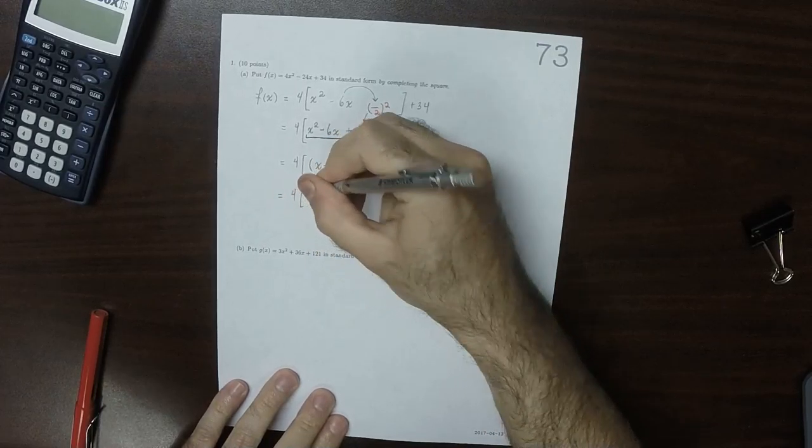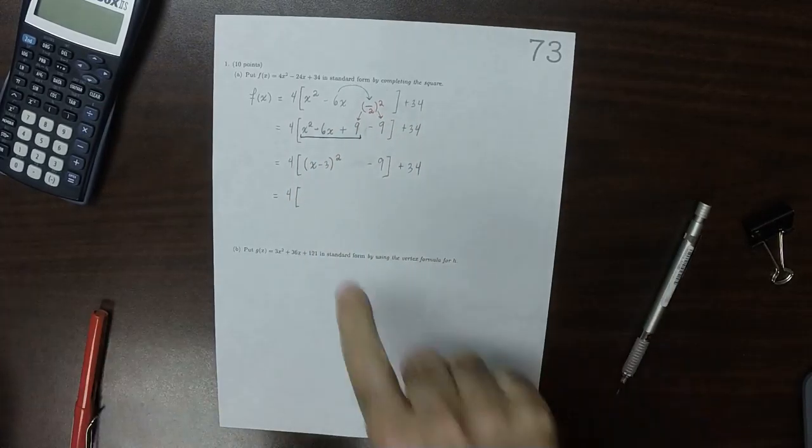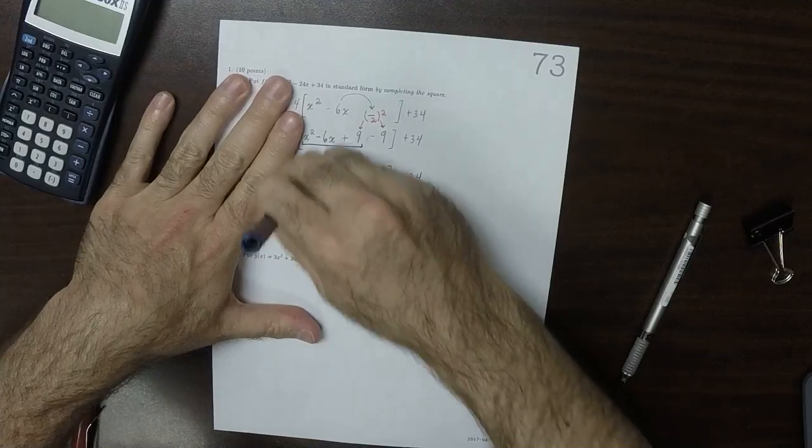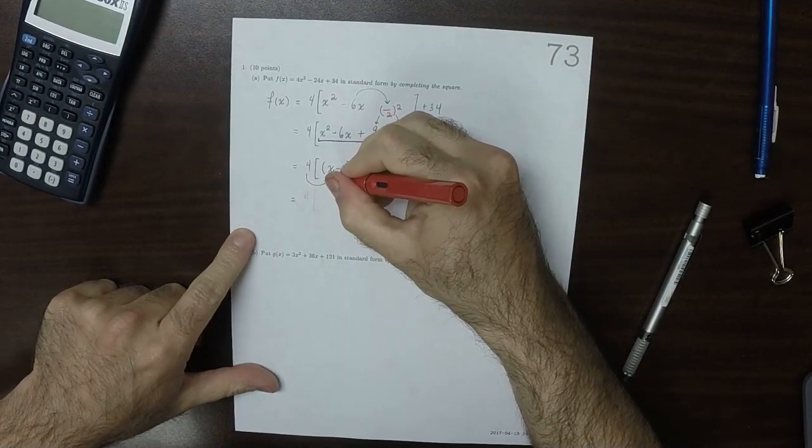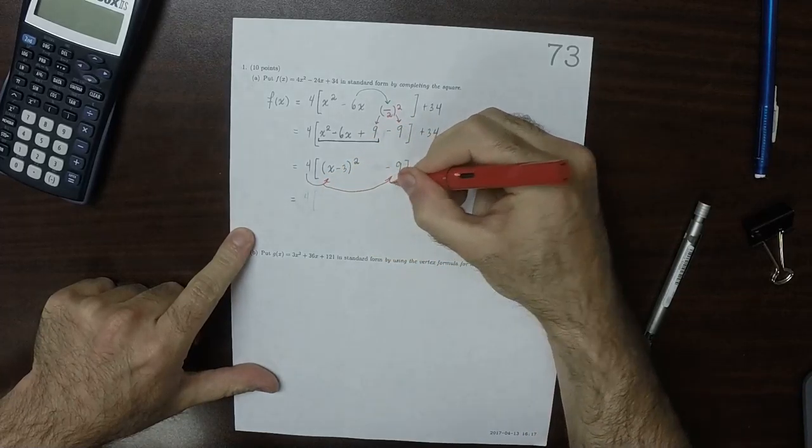So then 4, I'm going to distribute that. I'll distribute the 4 to there, and to there.